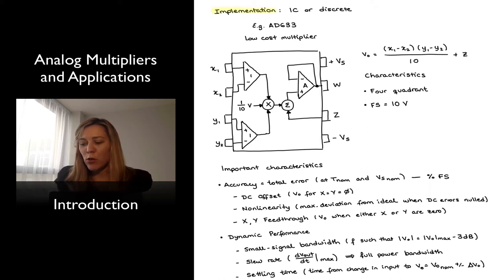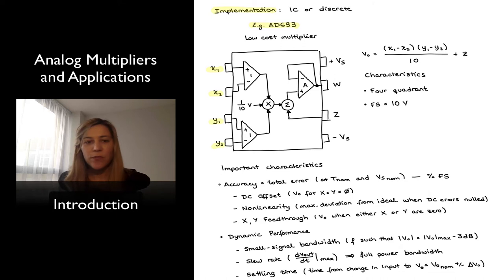An example of a low-cost multiplier is the AD633, which I have represented there. It is an 8-pin device. It has two differential input signals, x1 and x2 correspond to the positive and negative input terminals in the input buffer, y1 and y2 same thing. So the differential input signals will be x1 minus x2, y1 minus y2.